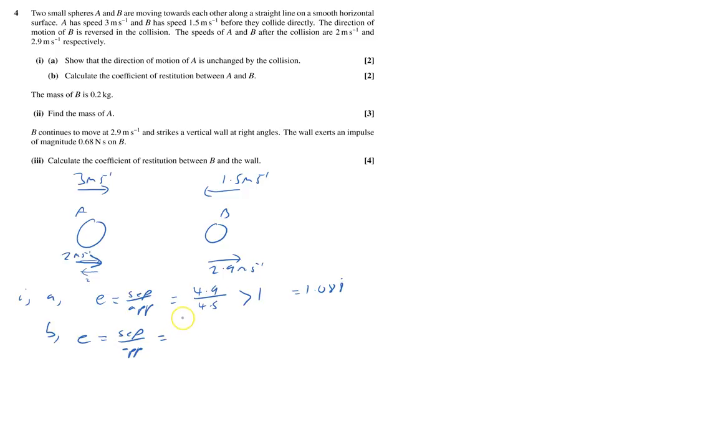The separation speed we now know is 0.9 divided by approach speed 4.5, and that equals 0.2.